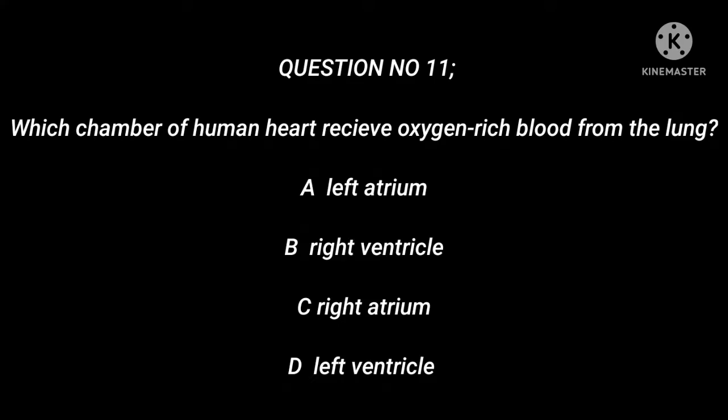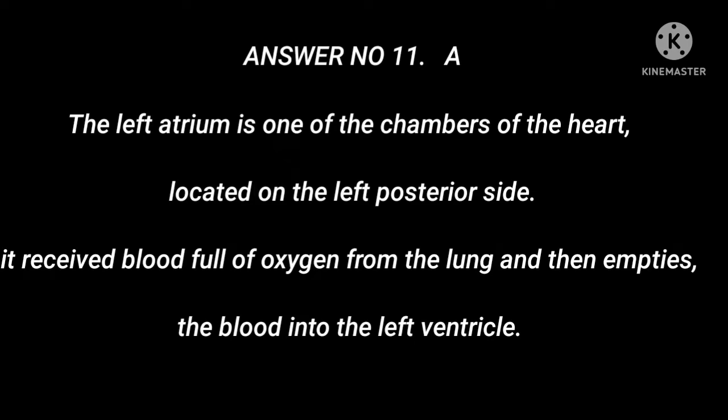Question number 11: Which chamber of the human heart receives oxygen-rich blood from the lungs? A. Left atrium. B. Right ventricle. C. Right atrium. D. Left ventricle. Answer number 11: A. The left atrium is one of the chambers of the heart, located on the left posterior side. It receives blood full of oxygen from the lungs and then empties the blood into the left ventricle.